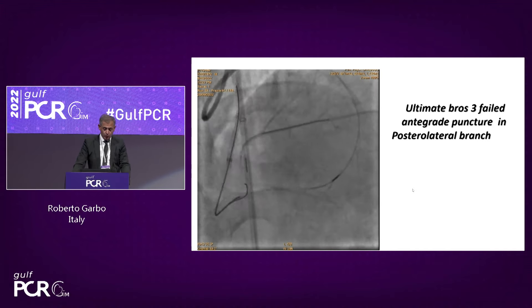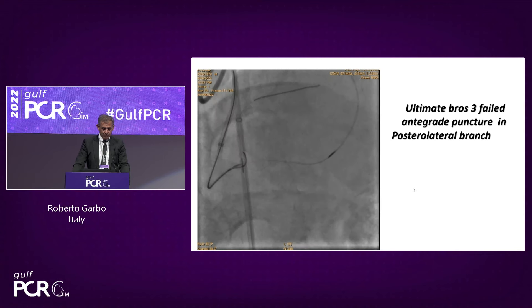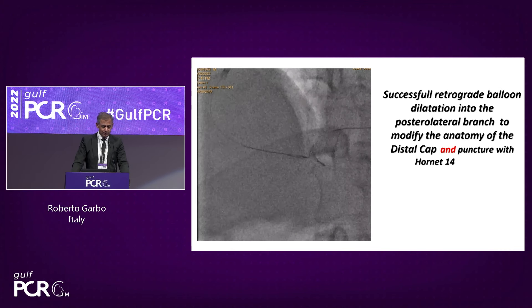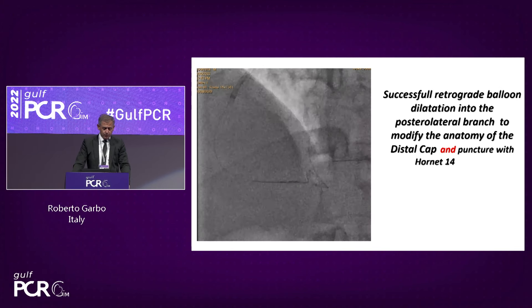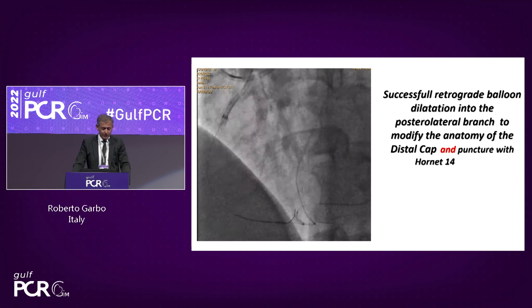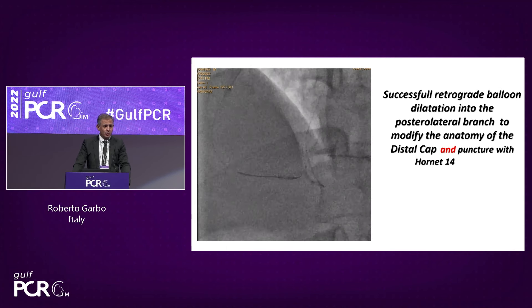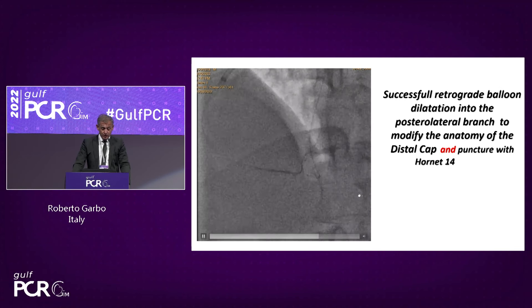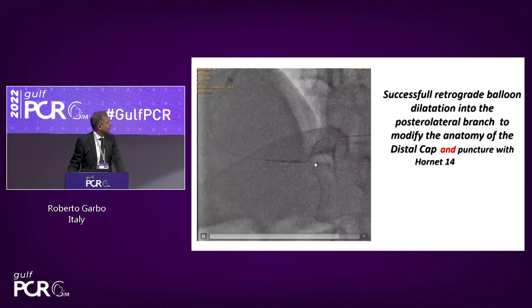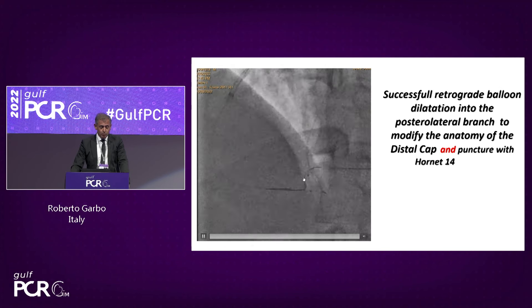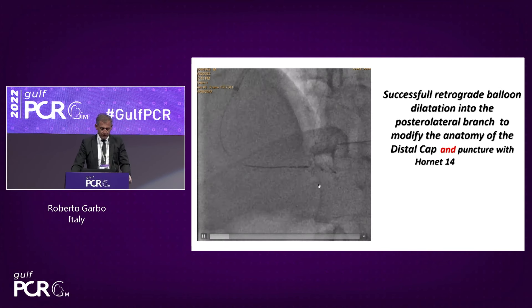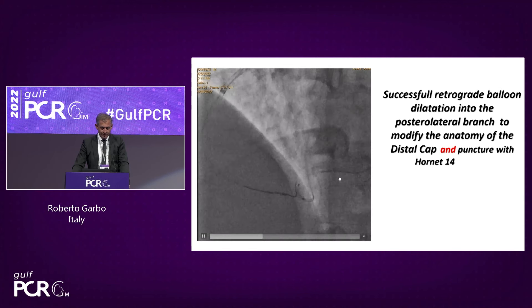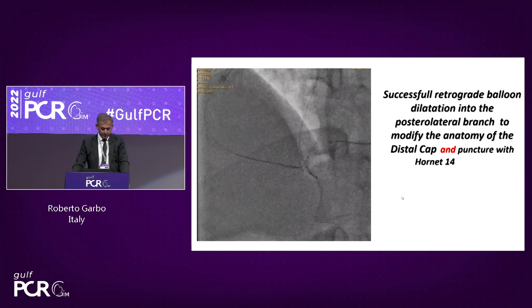I removed the microcatheter from retrograde and took a balloon — a sort of CART technique: balloon dilatation from the septal going retrograde to modify the distal cap at the level of the bifurcation, helping antegrade wire penetration. The Orate wire was able to puncture, as you can see, but I had a fracture of the wire tip due to the heavy calcification at the bifurcation and the complex anatomy.